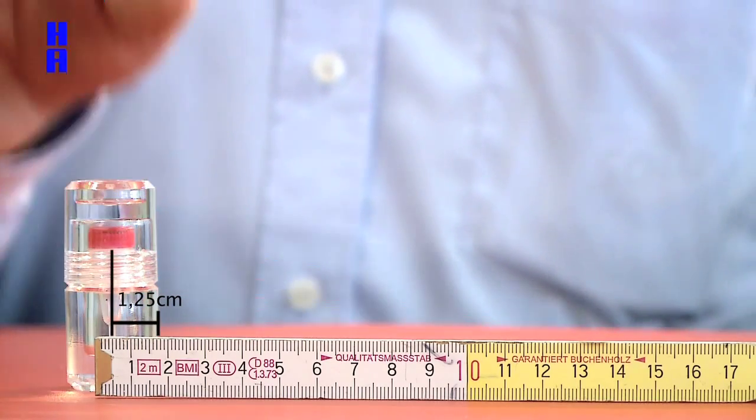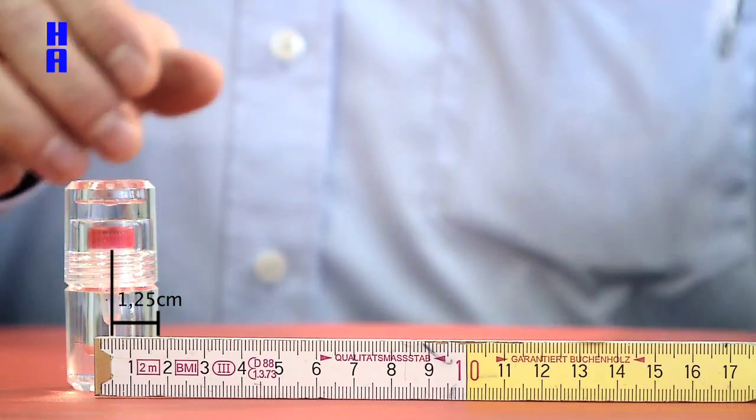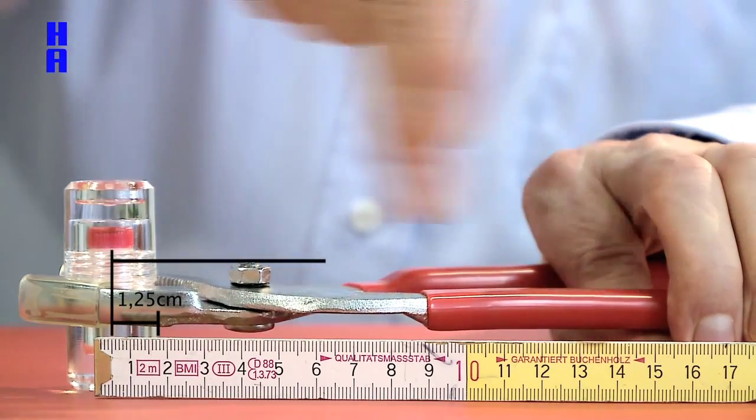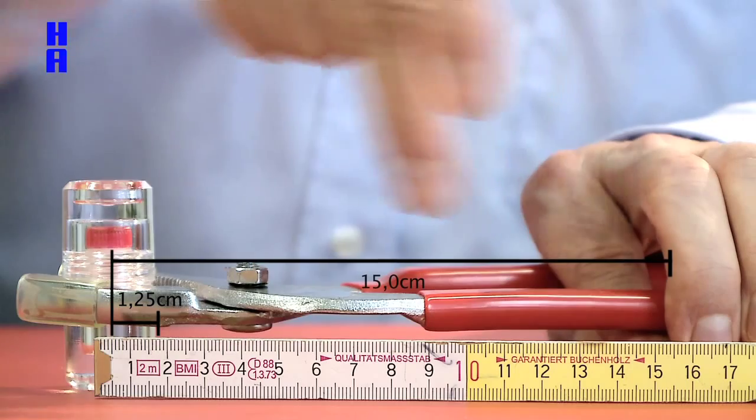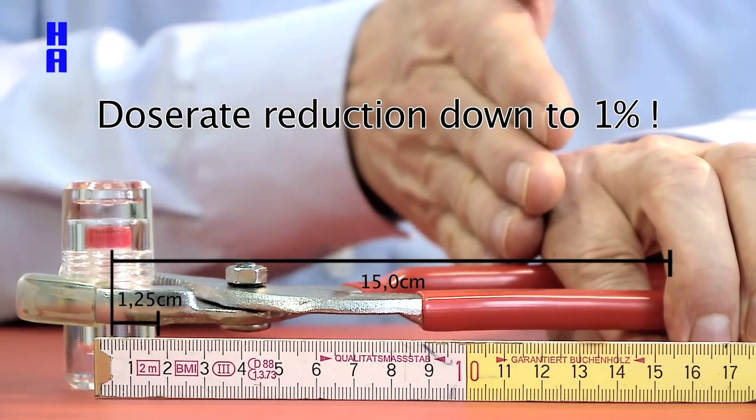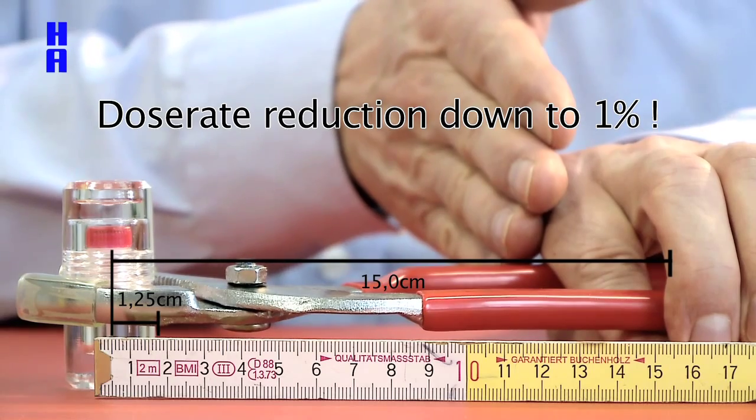If you want to reduce the dose to your hands, use a tool like this and the distance is enlarged up to about 15 cm, which reduces the dose rate onto your hands down to about 1%.